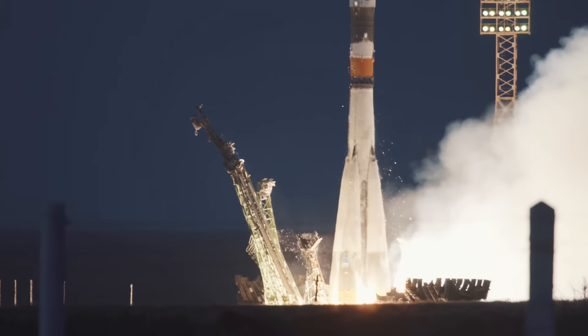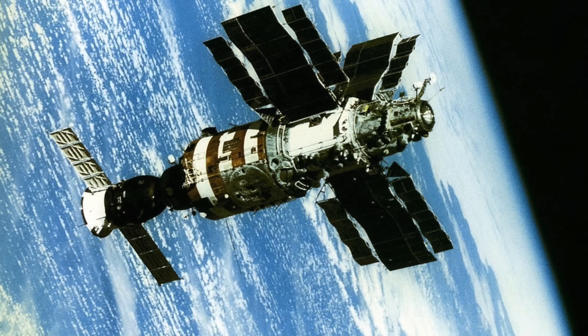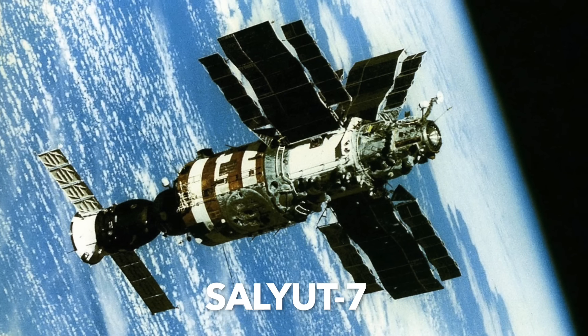So in 1985, cosmonaut Vladimir Janabekov was tasked with saving the Soviet space station Salyut 7, which had completely shut down. The mission was so dramatic that the Russians made a movie out of it in 2017.